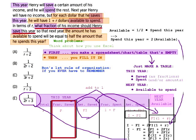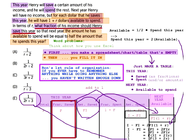This is what I call my first rule of organization: if you ever have to remember anything while doing anything else, you're not writing enough stuff down. For me, this is easy because I have a very bad memory — my memory is actually in the bottom percentile of humans. I had an accident as a kid that caused some brain damage, and basically my brain doesn't hold more than one thing at a time, so it's very natural for me to literally write down everything all the time.